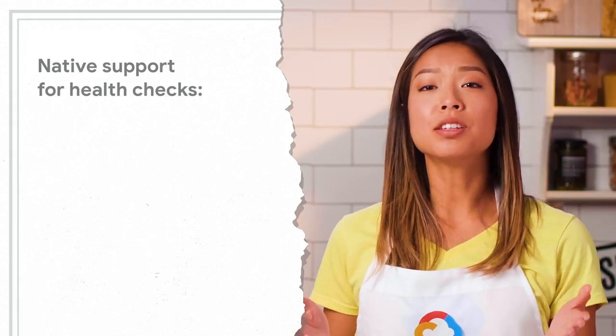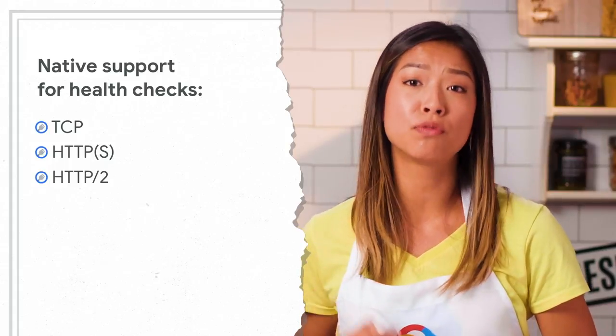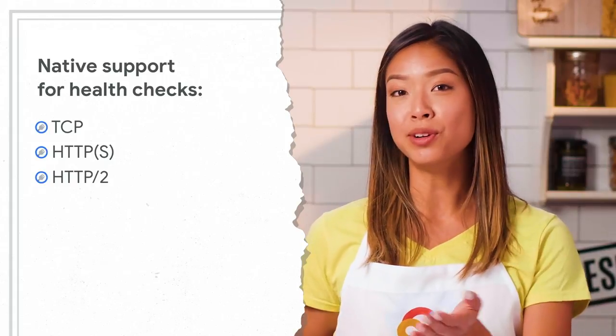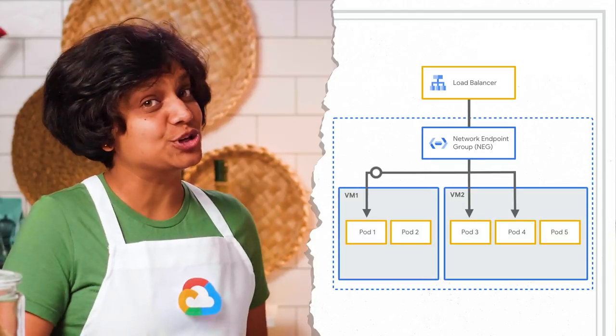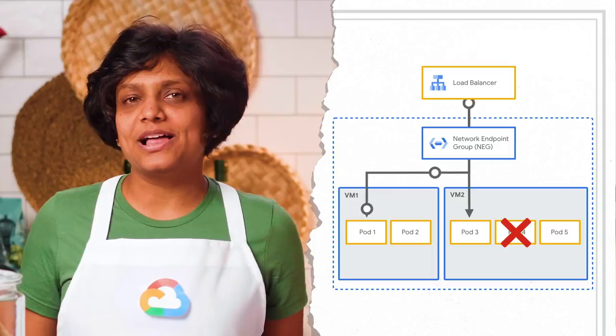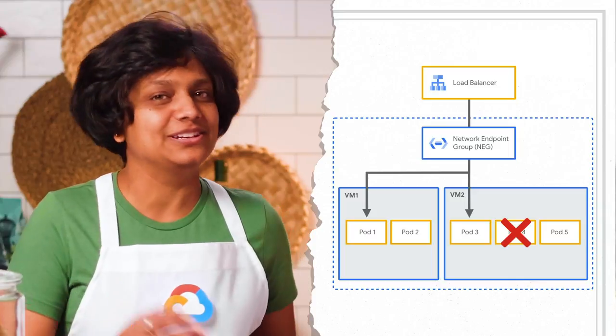Now that Beyond Treat has implemented a VPC native cluster with NEGs, they've experienced even better load balancing. With container native load balancing, traffic is distributed evenly among the available healthy backends in an endpoint group following their defined load balancing algorithm. They also now have native support for health checking, including TCP, HTTPS, or HTTP2 checks. NEGs can check the pods directly rather than the nodes forwarding health checks to a random pod. As a result, health checks more accurately mirror the health of the backends. Beyond Treat also benefits from graceful termination, meaning when a pod is removed, the load balancer automatically drains the connection to the endpoint, serving traffic based on the connection draining period configured for it.